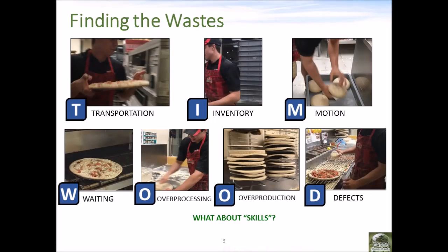The video moved pretty quickly, so it might have been hard to identify all the seven forms of waste, but they were there. So let's break it down looking at screenshots for each form of waste. For transportation, you might have noticed they're carrying the pizza from station to station and placing it on the oven. There will also be transportation to deliver the pizza to the customer, or customers coming to dine in or pick up, which was not shown in the video.